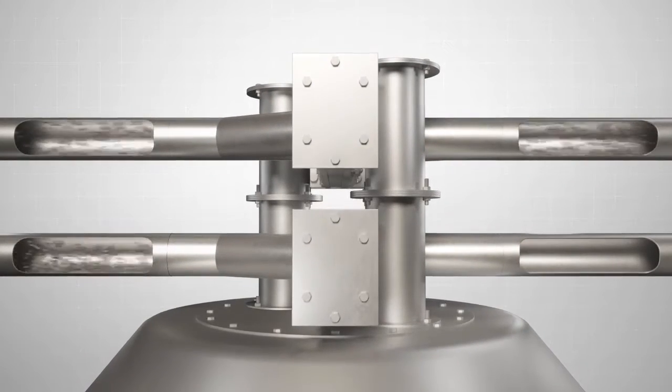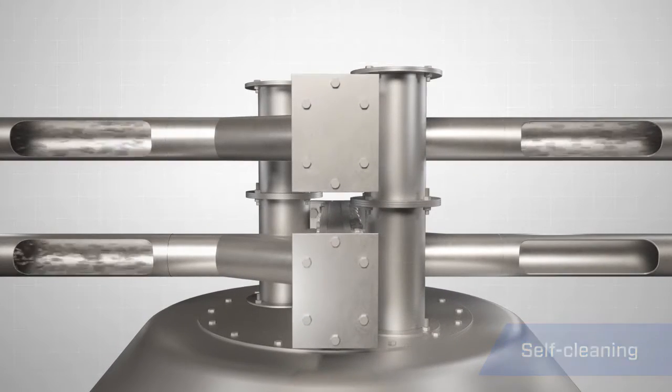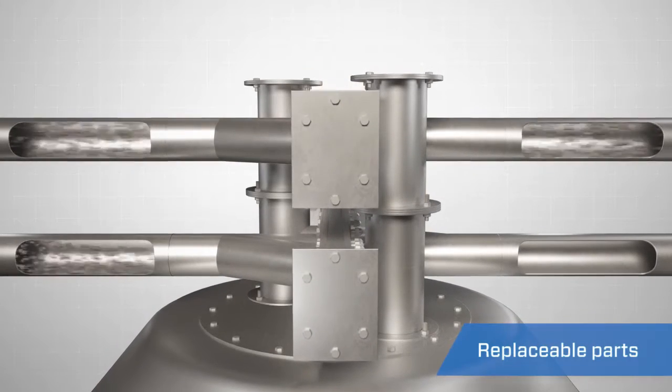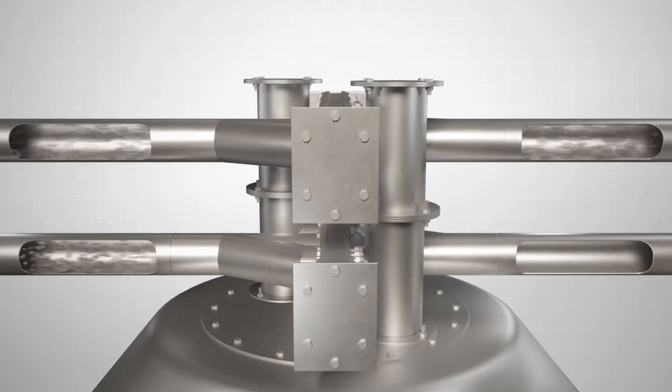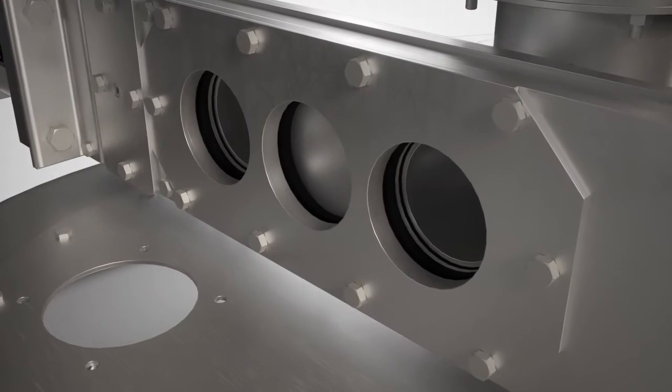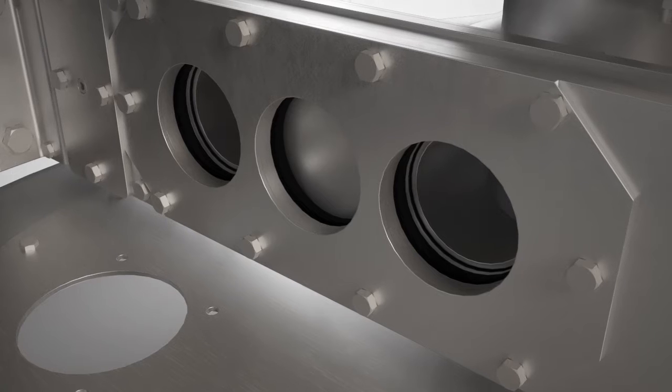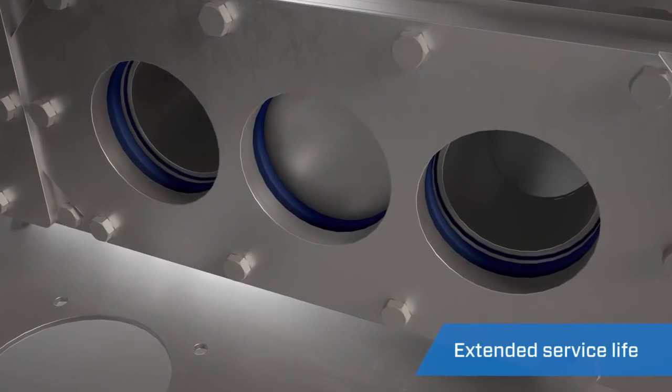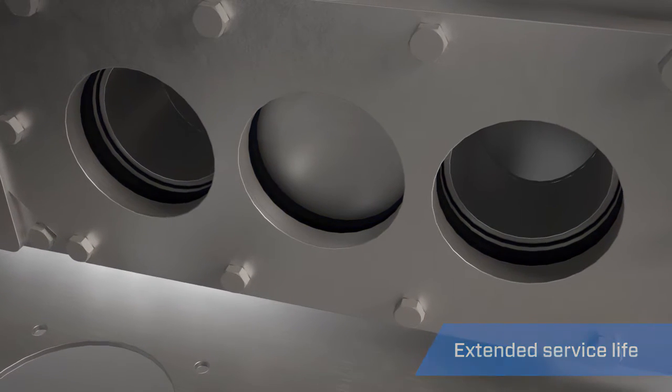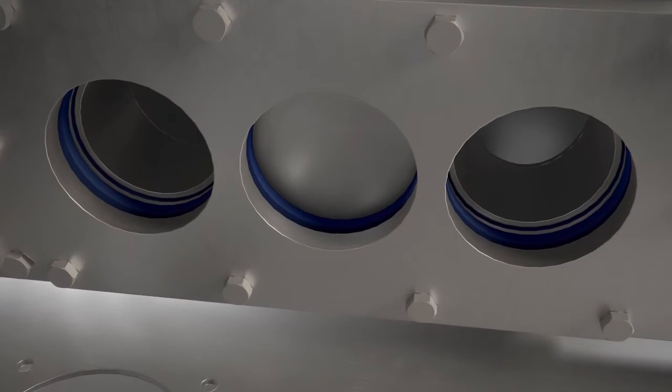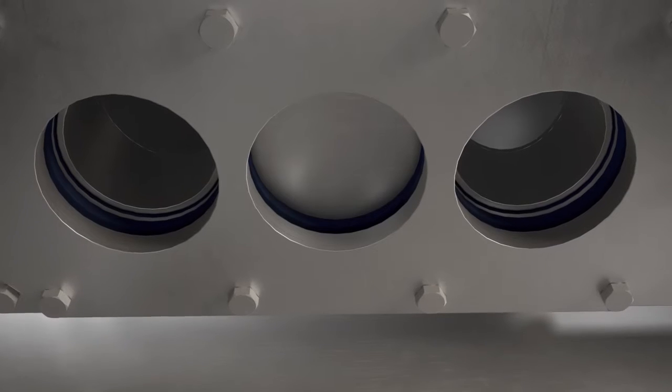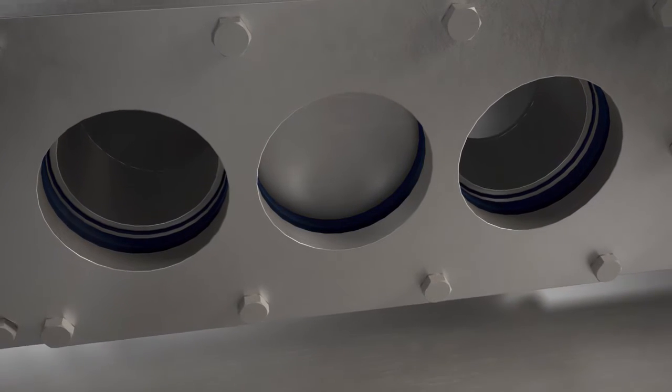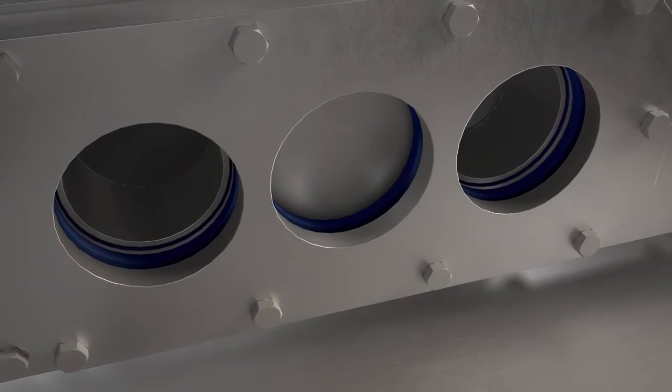The diverter mechanically self-cleans its seals with each actuation and has replaceable parts to prolong service life. For added durability, the diverters incorporate live loaded hard polymer seals providing greater wear resistance and longer service life. These seals are live loaded with compressed rubber backing to ensure the load seals continuously force the polymer seals against the blade.